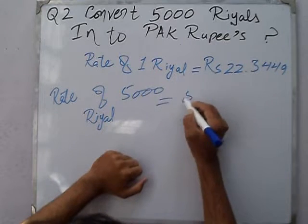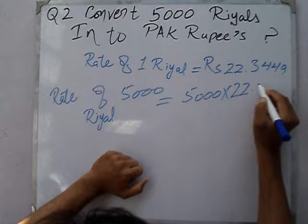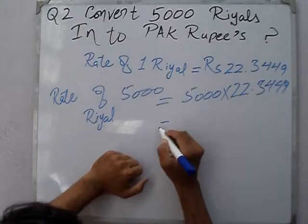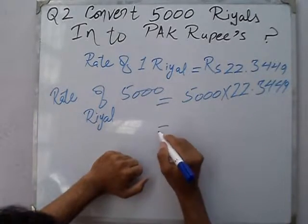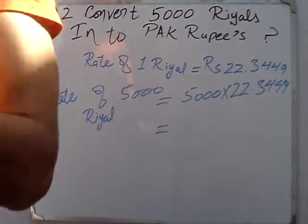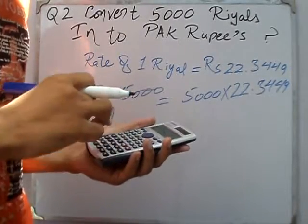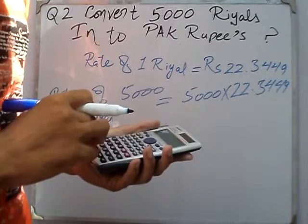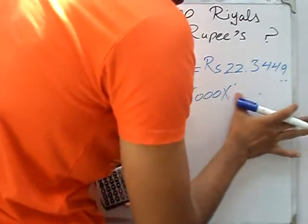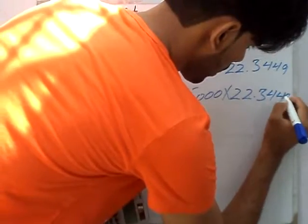5,000 riyals ka kya aayega? 5,000 riyals ko convert karna hai. 5,000 multiplied by 22.3449 equals...